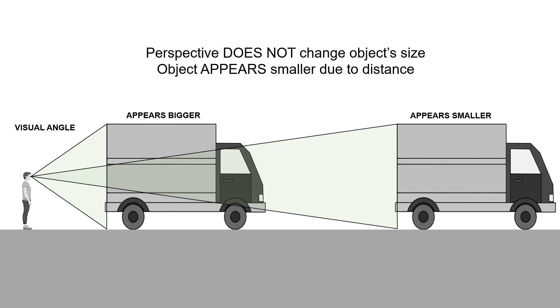Perspective does not change the object size. Objects appear smaller as they go off into the distance because, as you can see here, when the truck is close, the visual angle is large. When the truck gets farther away, the visual angle is smaller. Is this really that difficult for the flat earth community to understand?